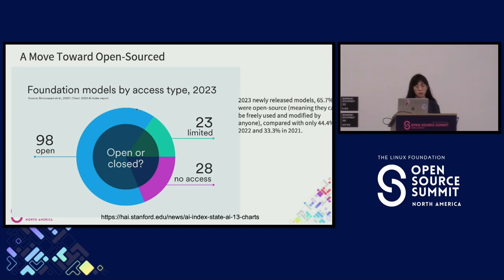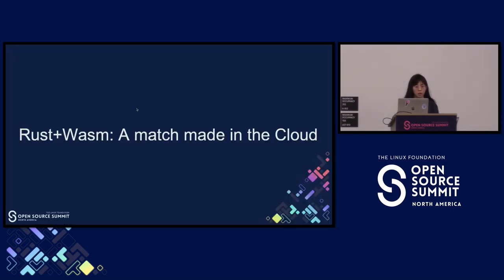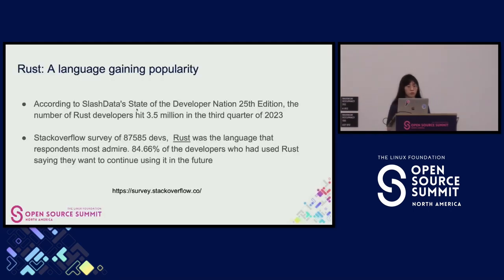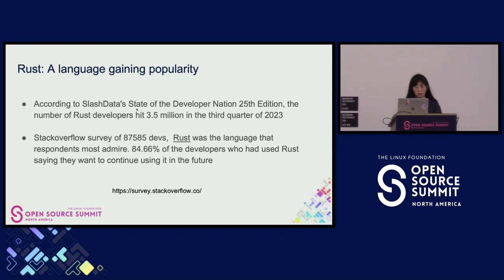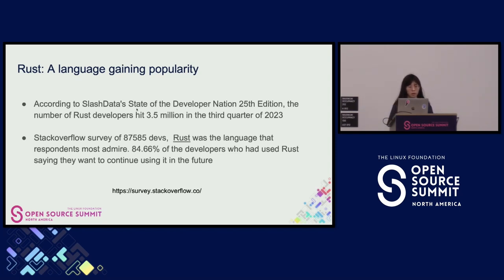Compared with the year before, there are big increases in open source LLMs. Now we get into Rust and Wasm. So why not Python? Rust is a comparatively newer language, but among younger developers it's gaining more popularity. According to the Stack Overflow survey, 84% of developers who have used Rust want to continue using it in the future — it's a really beloved language gaining increasing momentum.